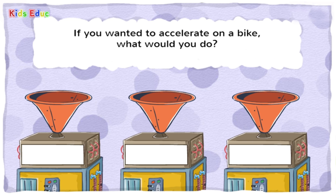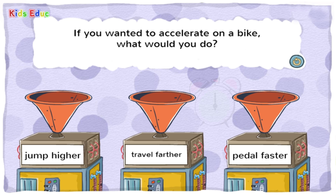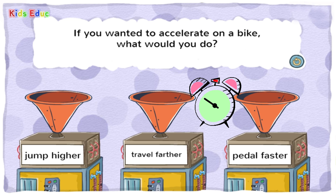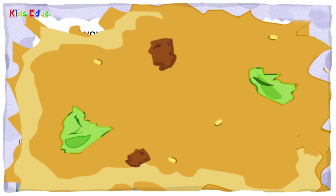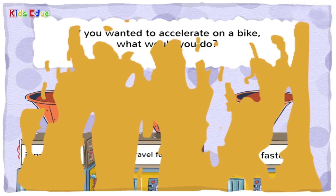If you wanted to accelerate on a bike, what would you do? Jump higher. Travel farther. Pedal faster. — Pedal faster. That's right! When you accelerate, you go faster.